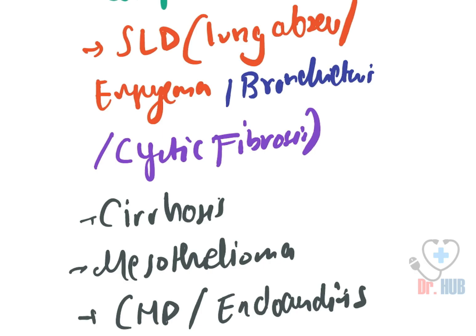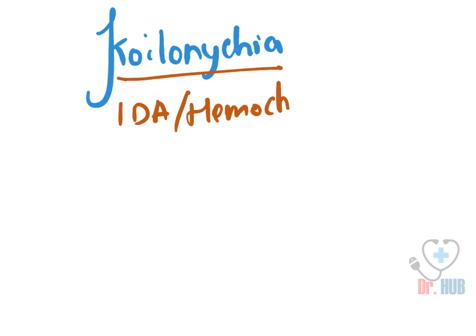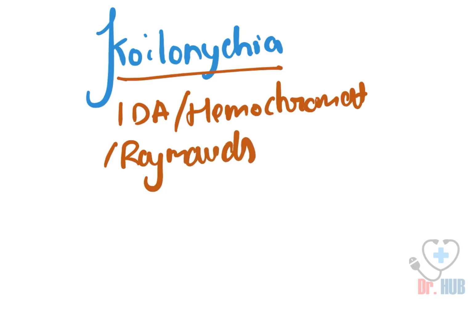Next we move on to koilonychia. Koilonychia implies iron deficiency anemia (IDA), hemochromatosis, and Raynaud's disease.